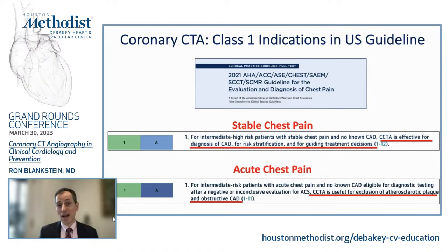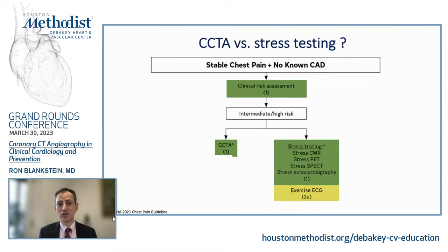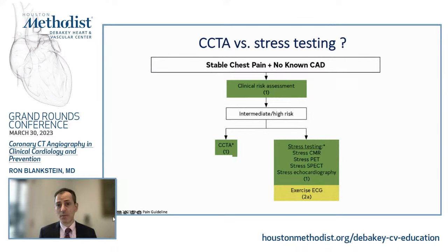All imaging tests, when done in the right scenario, ended up with class one recommendations. The real question for clinical cardiology is how to choose between CT and stress test. First, in patients without known coronary disease, we should only test when there is an intermediate to high pretest probability of obstructive disease. If the risk is low, guidelines state you can defer testing, or perhaps do a calcium score or exercise treadmill test — those are level 2A recommendations.